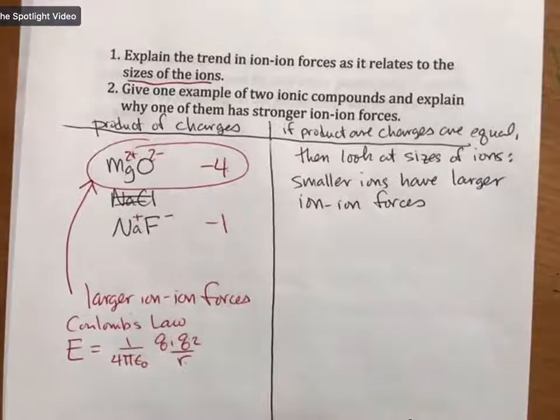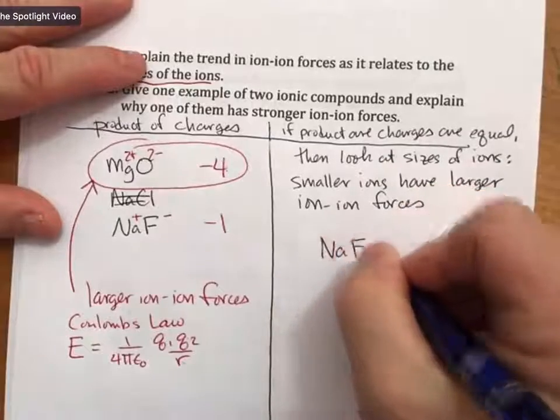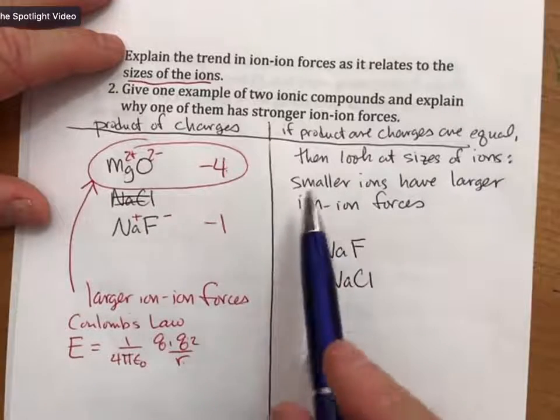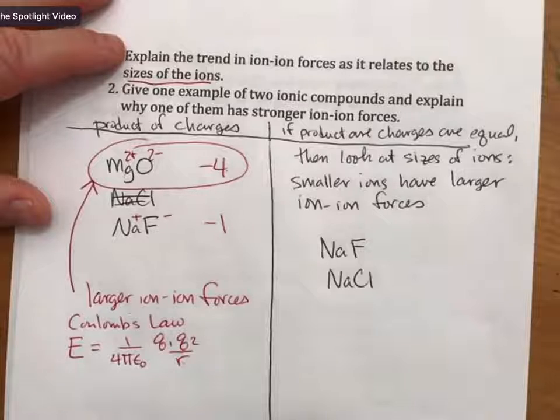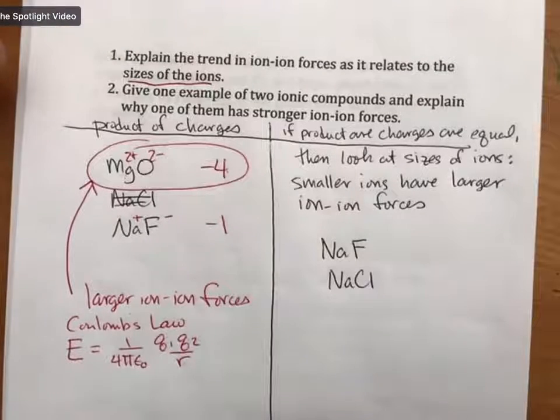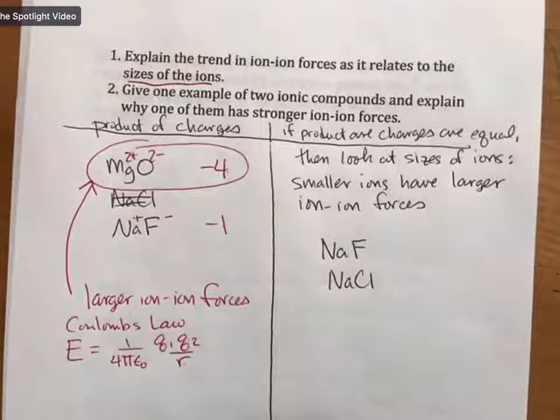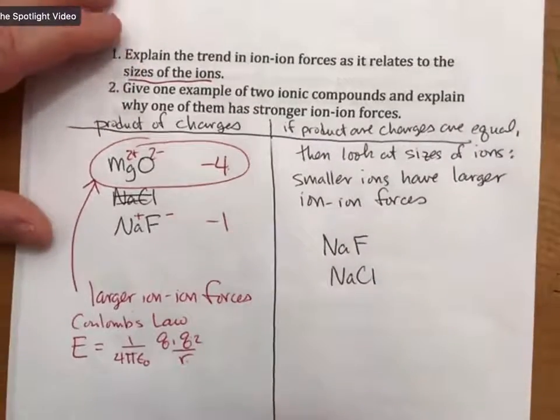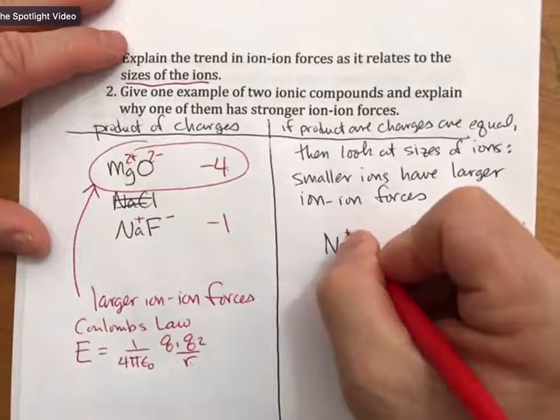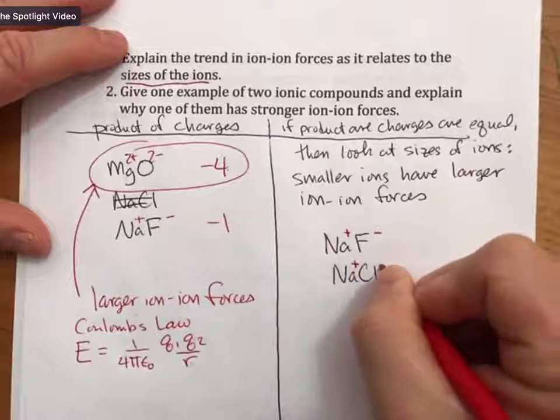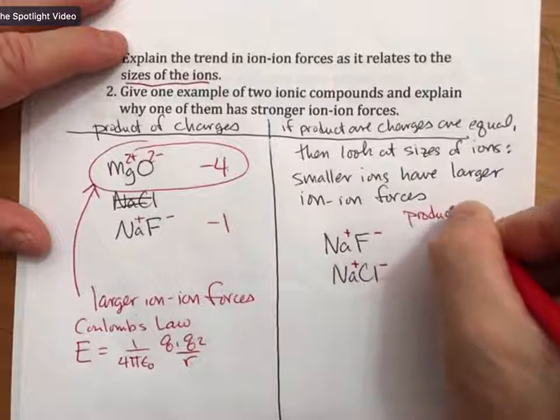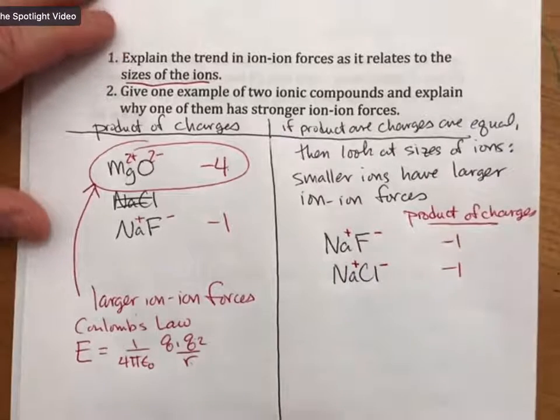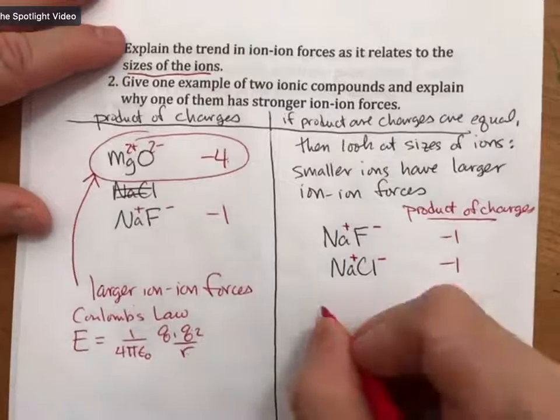Now, but let's suppose you have sodium fluoride versus sodium chloride. And now these, so if we look at the product of charges, and we always look at the product of charges first, the product of charges is the bigger trend, is the easier trend, is the trend with the larger magnitude. So, this is going to be plus one, minus one, plus one, minus one. So, our product of charges are the same.